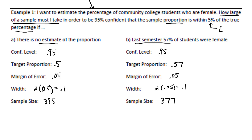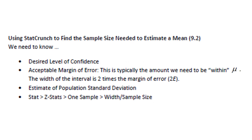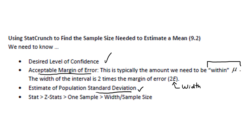We found the sample size is 377, so we need at least 377 community college students in our survey. Using StatCrunch to find the sample size when estimating a mean, there are still three things we need: the desired level of confidence, the width (found by doubling the margin of error), and an estimate of the population standard deviation. Once we have those three things, we'll go to Stat, Z-Stats, One Sample, Width, Sample Size. Notice that unlike with confidence intervals, we'll go to Z-Stats, not T-Stats.